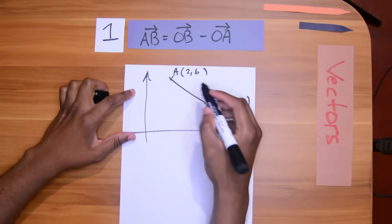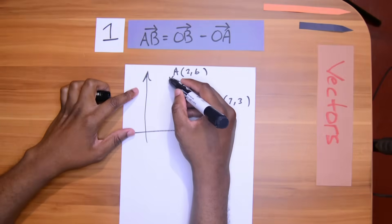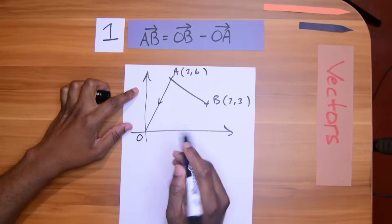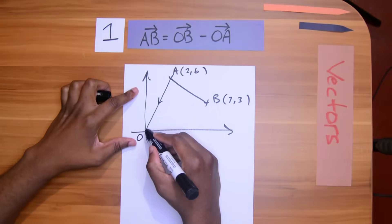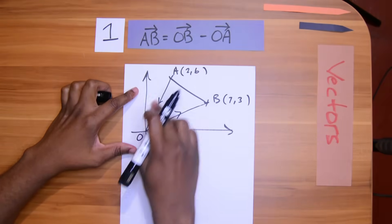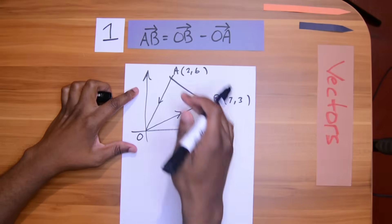So this is the fun part now. If I want to find AB, instead of going A to B, I can go from A down the triangle to O, which you know is the origin, and go up to B. Because you see, it doesn't matter which direction I take. Once I leave and I end up on B, I would have created the vector AB.